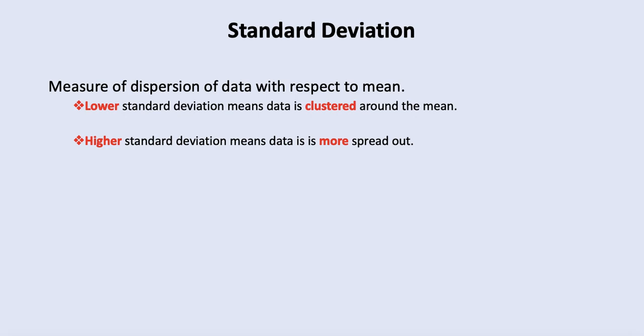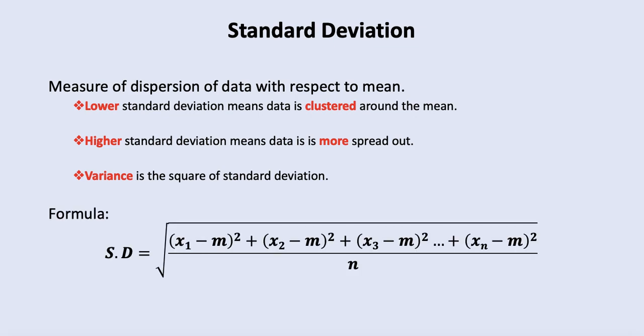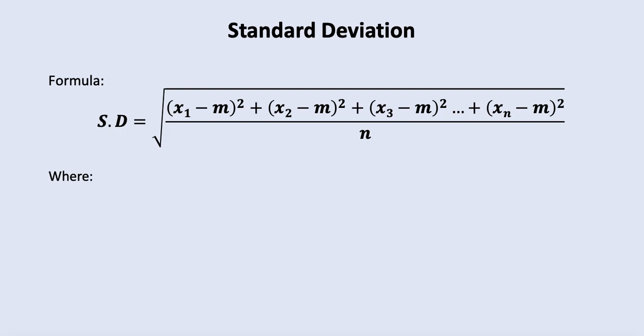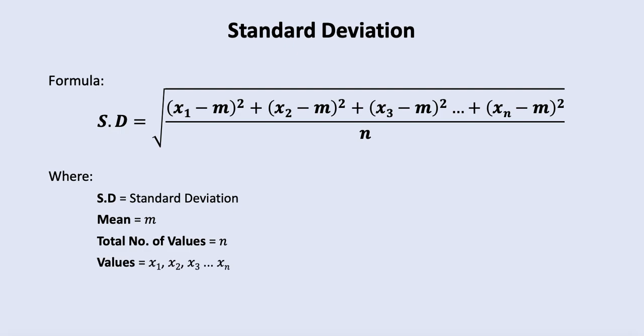So what exactly is variance? Variance also defines the same values, but the difference lies in its unit and the way we find the variance. This is the formula for standard deviation, where SD is the standard deviation, m is the mean, and n is the total number of values. The values are x1, x2, x3, up to xn. We subtract each value from the mean, take the square of each, add those, divide by the total number of values, and finally take the square root.